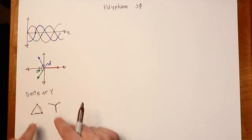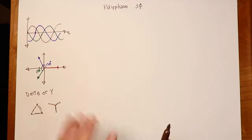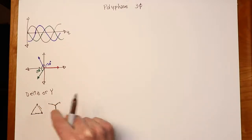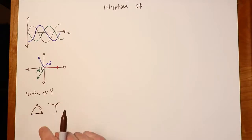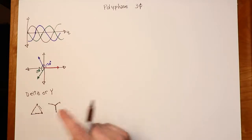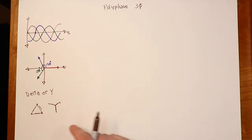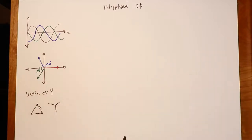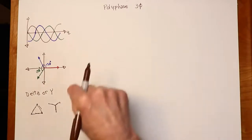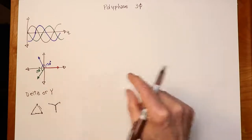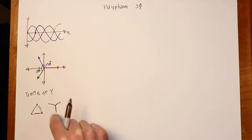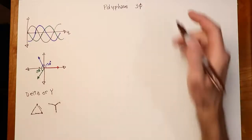Because we have the options of delta and Y connections, there are four possibilities: a Y source with a Y load, a Y source with a delta load, a delta source with a delta load, and a delta source with a Y load. What we want to look at in this video are Y loads — we'll look at both the Y generator and a delta generator, but the loads will be Y-connected, and these are going to be balanced loads.